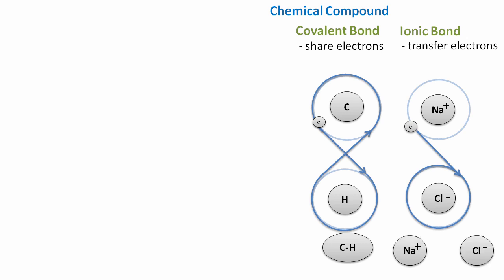So sodium becomes positive, chlorine becomes negative, and as they attract each other, they actually form another type of bond. This is called an ionic bond, almost like two magnets sticking together.